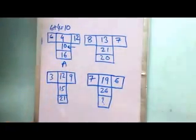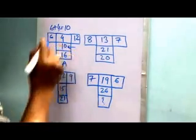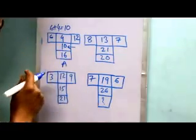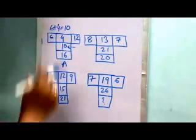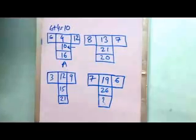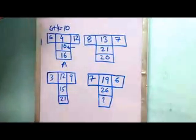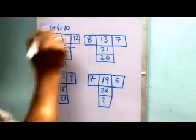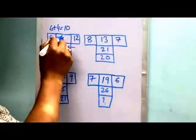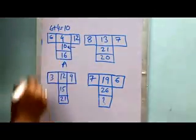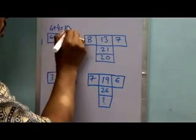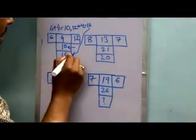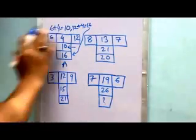Now consider the middle digit, 4, and the top right digit, 12. If we add the numbers, what we get: 12 plus 4 equals 16. That 16 is placed here. So this is the simple logic.